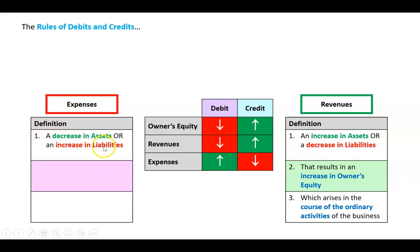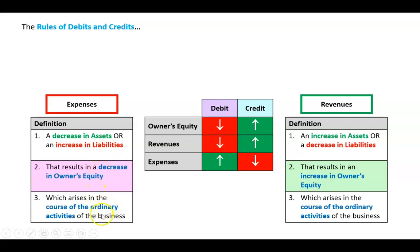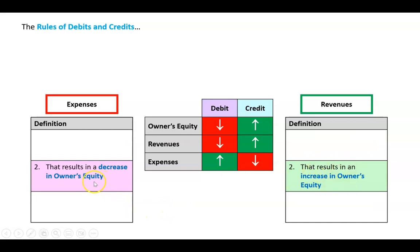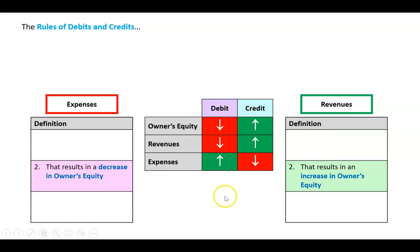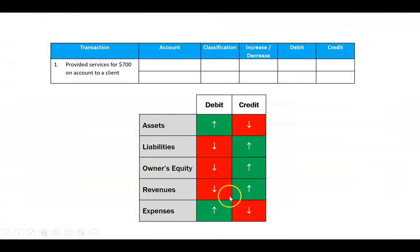The definition of expenses is: a decrease in assets or an increase in liabilities that results in a decrease in owners equity, arising in the course of ordinary activities. So revenues increase owners equity — therefore revenues go up on the credit side, just like owners equity. And expenses decrease owners equity — therefore expenses go up on the debit side.